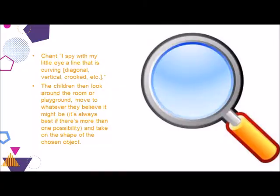Once the children have had ample experience with various kinds of lines, ask them to find some on their own with a game of I Spy. Chant: "I spy with my little eye a line that is curving" — or diagonal, or vertical, or crooked, etc. The children then look around the room or playground, move to whatever they believe it might be — and it's always best if there's more than one possibility — and take on the shape of the chosen object.